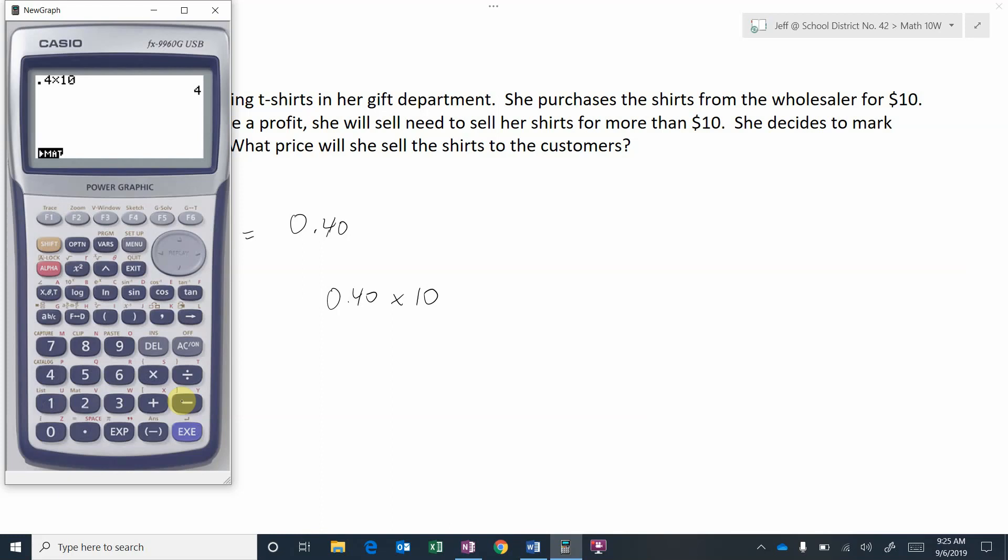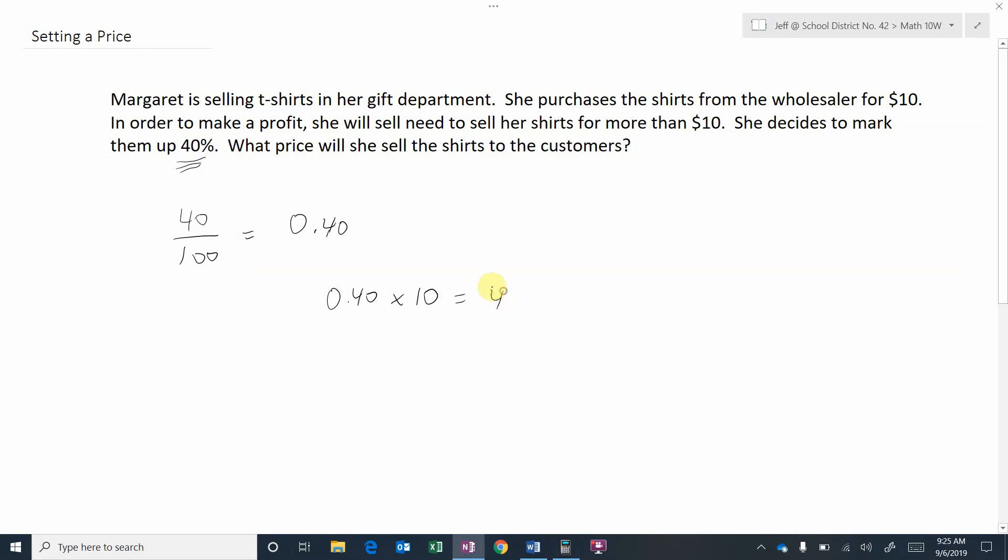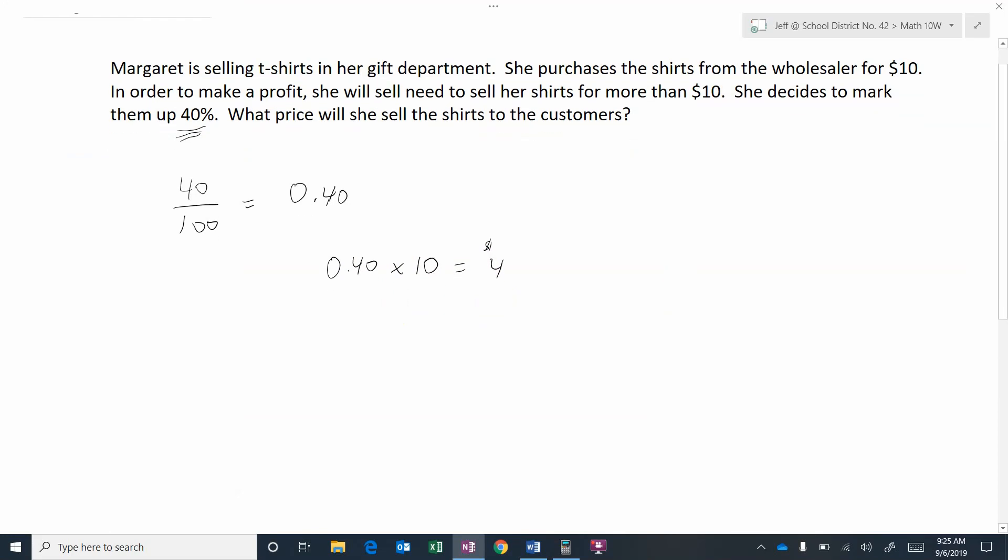So we now know that 40% of—and 'of' means times—so 40% of 10 is $4. So she's gonna mark them up by $4. So what price will she sell the shirts to the customer? $10, because that's what she paid for the shirts, plus $4 of a markup. So she is going to sell shirts for $14.